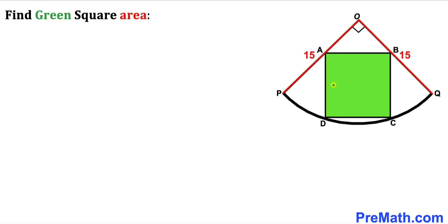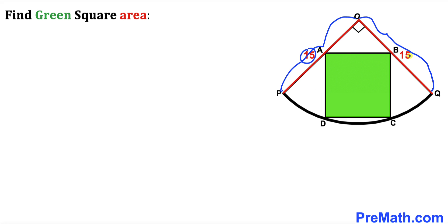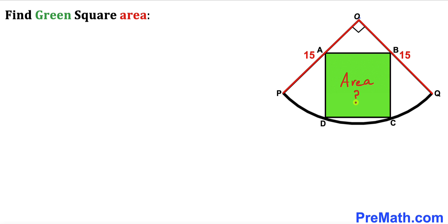Welcome to pre-math. In this video we have got a green square ABCD fully inscribed in a quarter circle, such that the center of this quarter circle is O and the radius is 15 units on both sides. This angle is 90 degrees and our task is to calculate the area of this green shaded square ABCD.